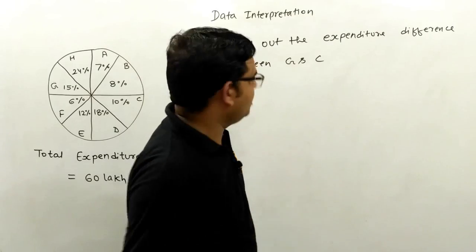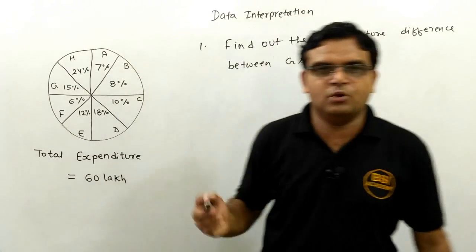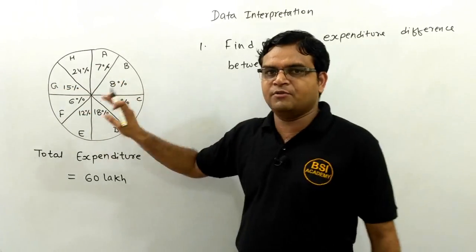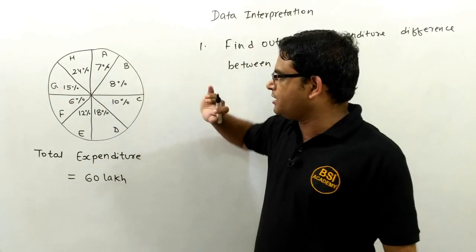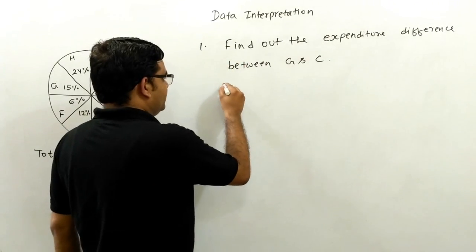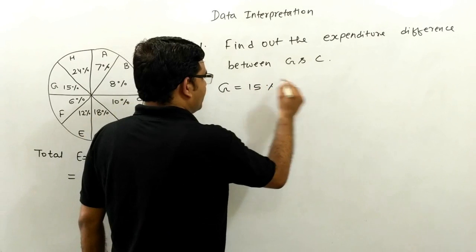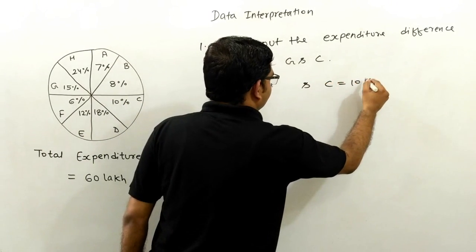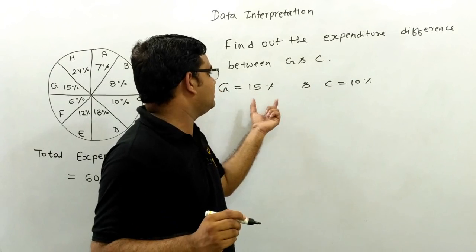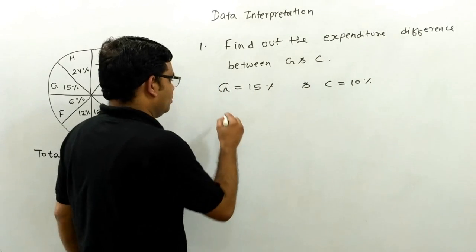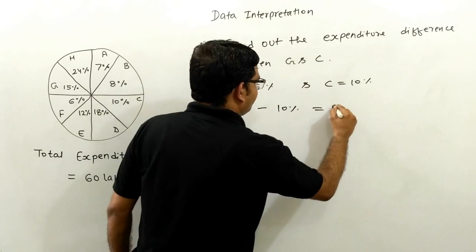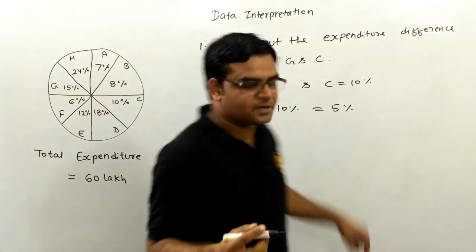To solve this, first we have to know the individual expenditure of G and C. The individual expenditure of G is 15% and the individual expenditure of C is 10%. The difference between these two values in percentage terms is 5% — that is, 15% minus 10% gives us 5%. So we need 5% of 60 lakh.